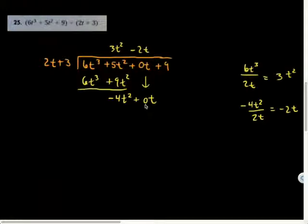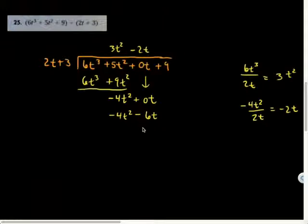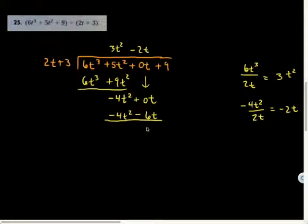Now multiply, distribute to both of those. Negative 2t times 2t is negative 4t squared. Negative 2t times 3 is minus 6t, not 60 but 6t. Subtract: negative 4 minus a negative 4 is plus 4, so that's zero. Zero minus a negative 6, positive 6t.